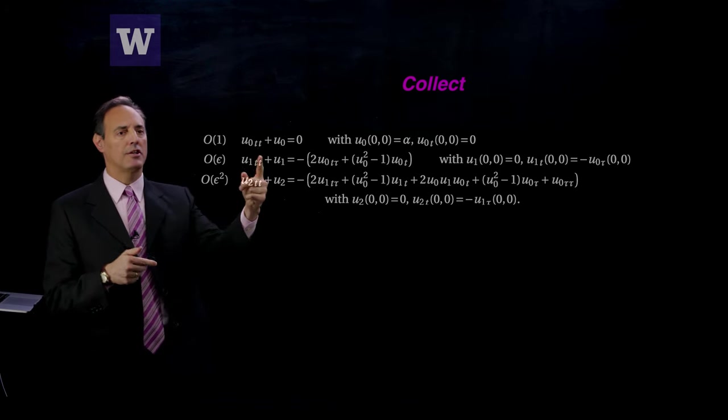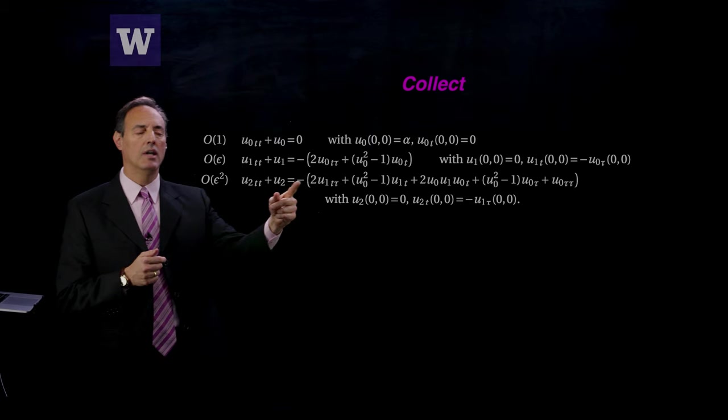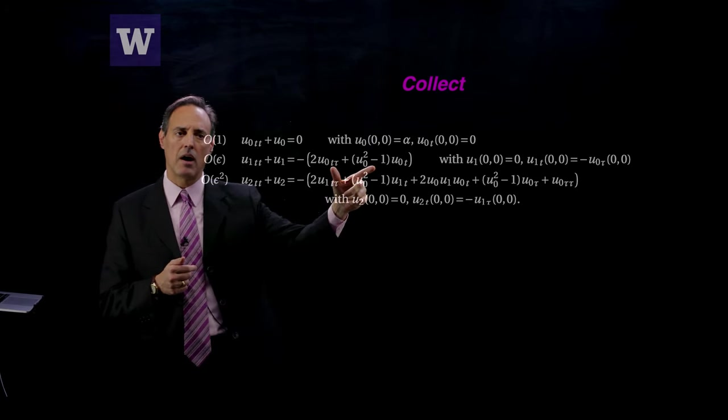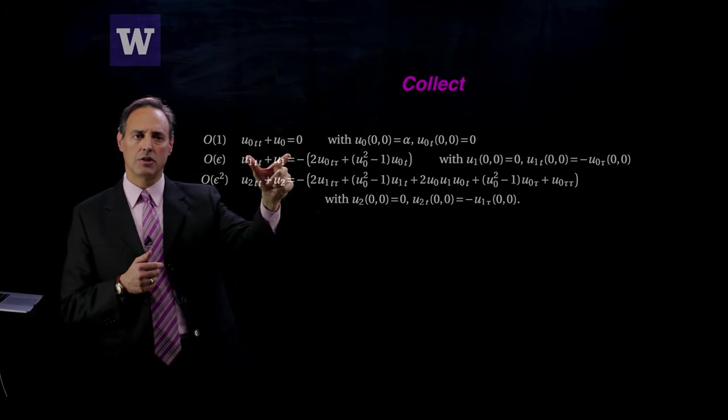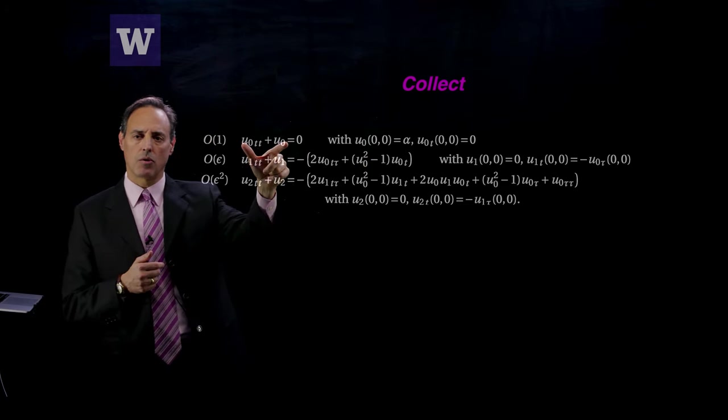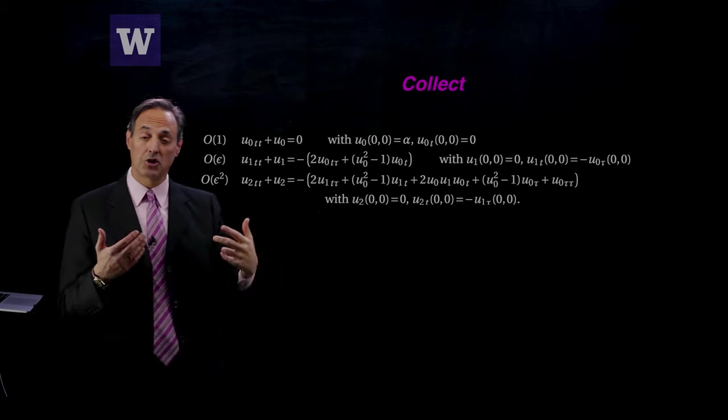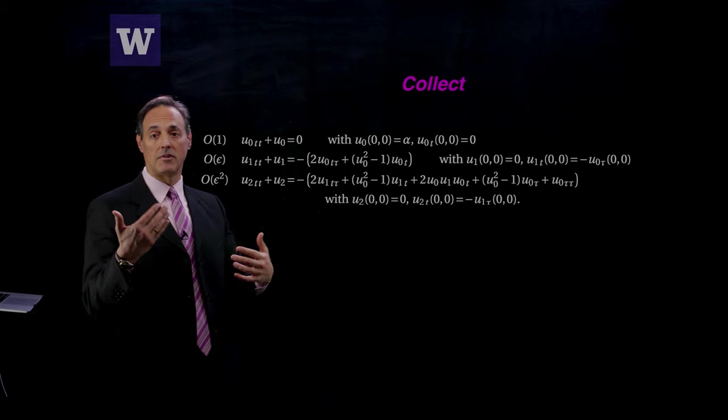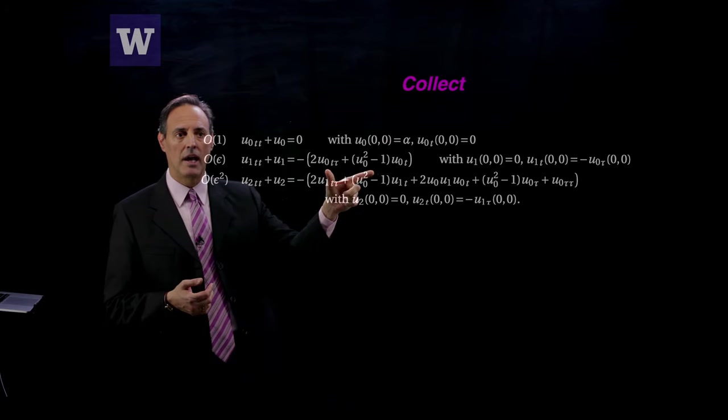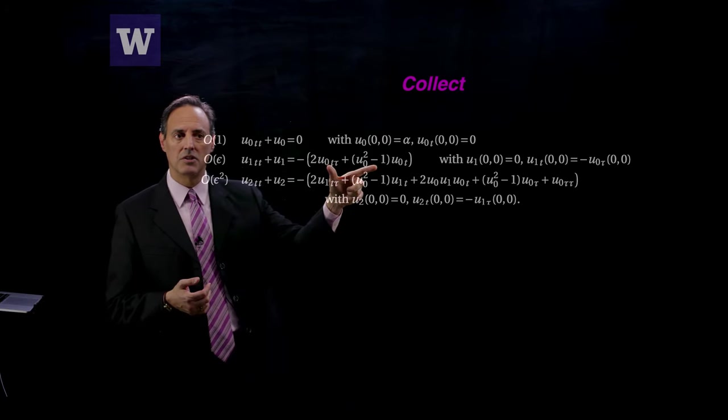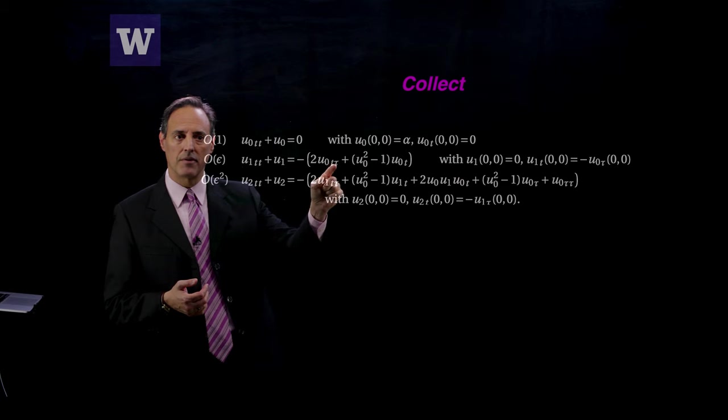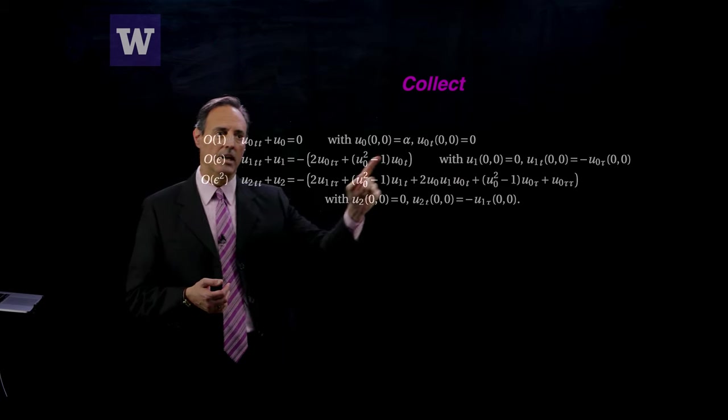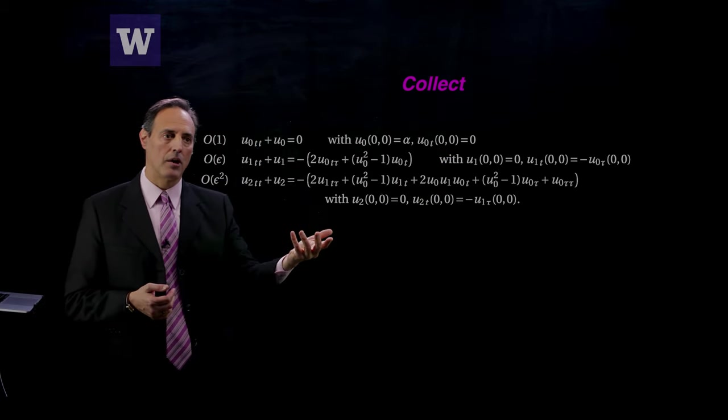Now I'll go to the next order: u1_tt plus u1. The right-hand side is a function of u0 and its tau derivatives. I just said the leading order is only a function of t. But what we're going to show is that the leading order solution has some constants, and those constants can be functions of the slow variable tau. That's why it's important here because these terms have a tau derivative, u0_ttau.